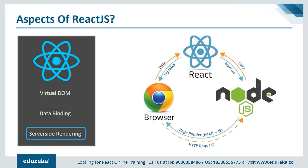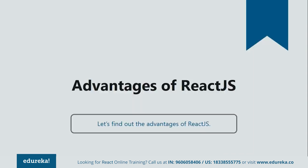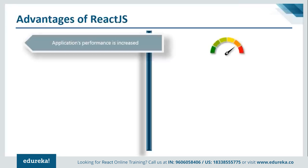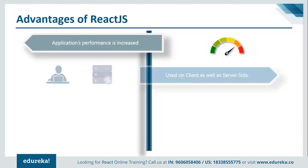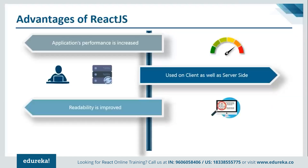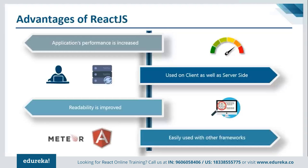Our third and last aspect is server-side rendering. Server-side rendering allows you to pre-render the initial state of your React component at the server side only. Because of this, the page loads faster. With server-side rendering, the server's response to the browser is the HTML of the page that is ready to be rendered. Thus the browser can start rendering without having to wait for all the JavaScript to be loaded and executed. All these features together make React.js a powerful and robust library with major advantages: increased performance due to virtual DOM, usable on client and server side, JSX increases code readability, and easy integration with frameworks like Meteor or AngularJS.